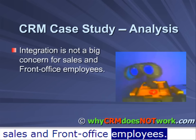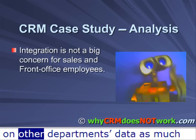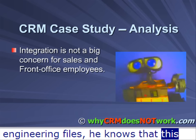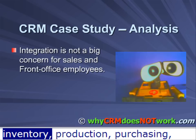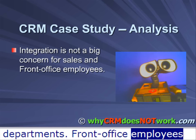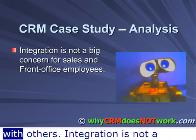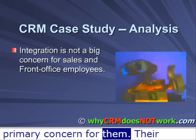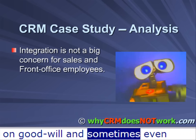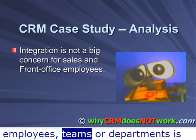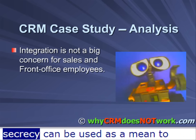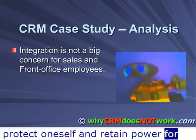Integration is not a big concern for sales and front-office employees. Front-office employees do not depend on other departments' data as much as their back-office colleagues do. When an R&D engineer modifies engineering files, he knows that this will have an impact on other departments — inventory, production, purchasing, QC, etc. There is no such awareness and domino effect in front-office departments. Front-office employees process a lot of unstructured information and exchange little data with others. Their knowledge of the needs of other departments is often limited. Their relations with their peers are generally informal, lightly structured, dependent on goodwill, and sometimes even competitive. Competition among employees, teams, or departments is sometimes sought as a way to stimulate activity. As a corollary, secrecy can be used as a means to protect oneself and retain power for both employees and managers.